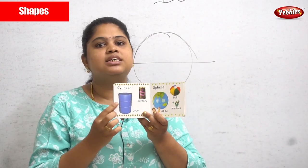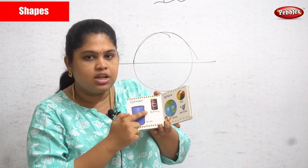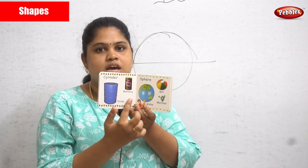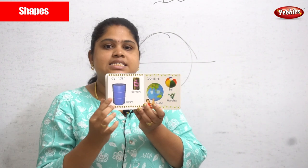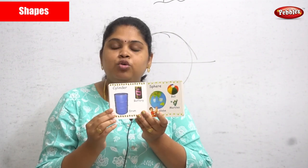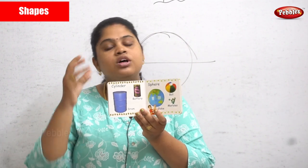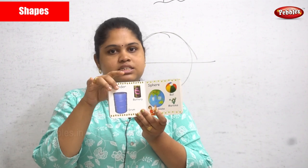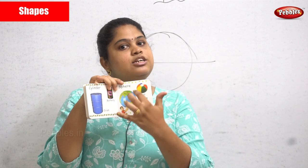Next is the cylindrical shape. A drum looks like a cylinder shape. Batteries are also cylindrical in shape — you can check by taking a battery out of a toy car to see it looks like a cylinder.